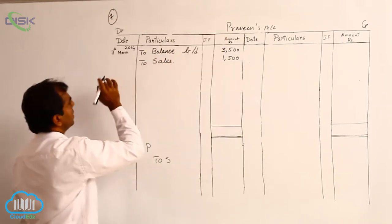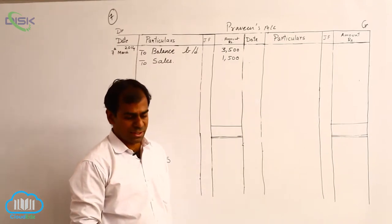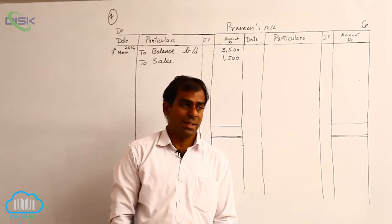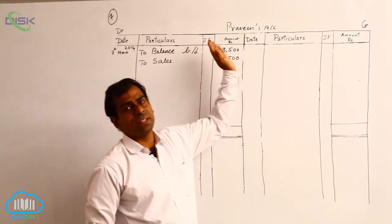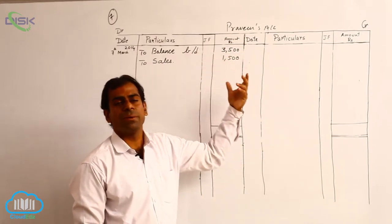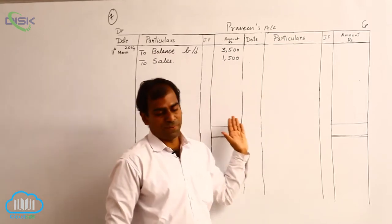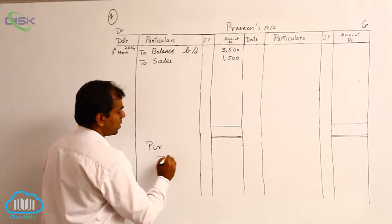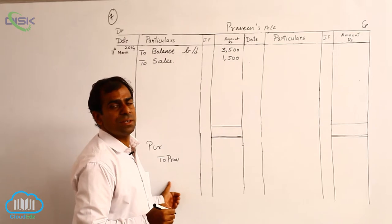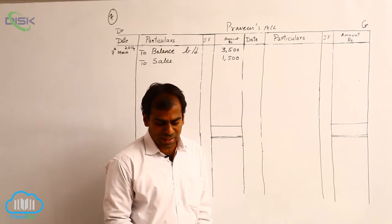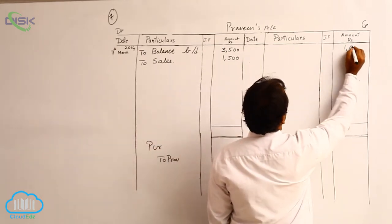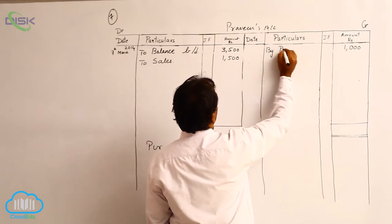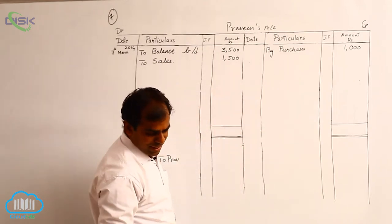Why are we debiting Praveen's account? Because of sales. Now the next transaction is on 10th — purchased goods from Praveen. The journal entry would be purchases account debit to Praveen's account. As a result of this transaction, we are crediting Praveen's account with 1000 rupees on the credit side. The reason for crediting Praveen's account is purchases, so we write purchases on the credit side. The date being 10th.